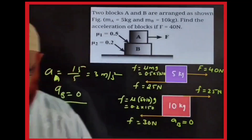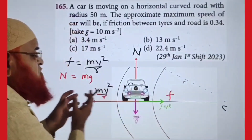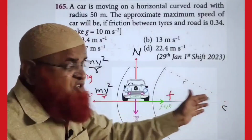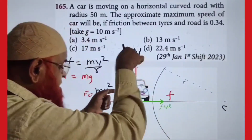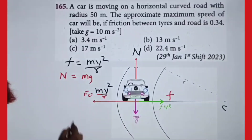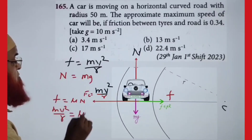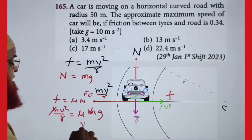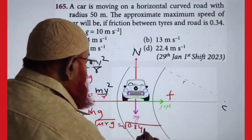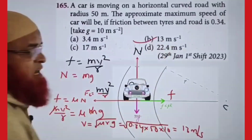A car moves on a curved path: centrifugal force mv²/r acts outward, friction acts inward as centripetal force, normal reaction balances mg. Setting friction = centripetal force: μmg = mv²/r, m cancels giving v = √(μrg). With μ=0.34, r=50m, g=10: v = √(0.34×50×10) = √170 ≈ 13 m/s.